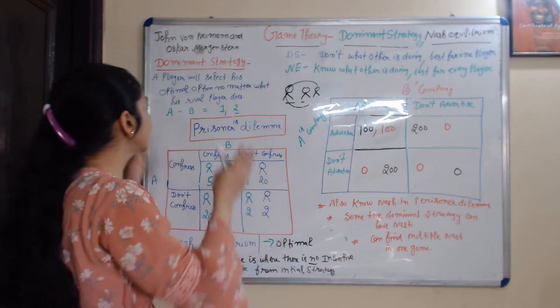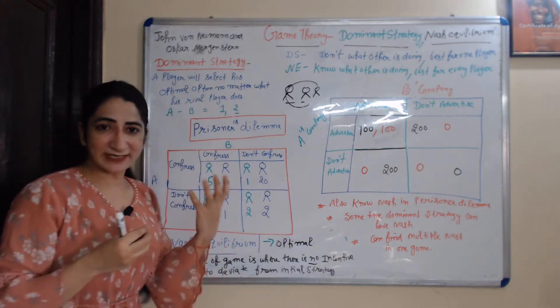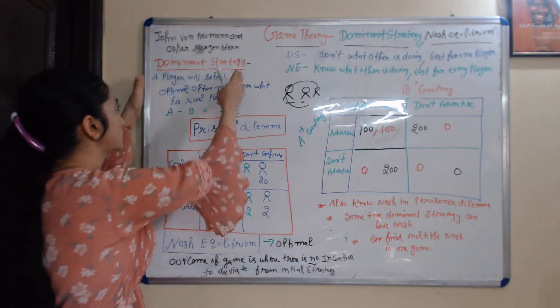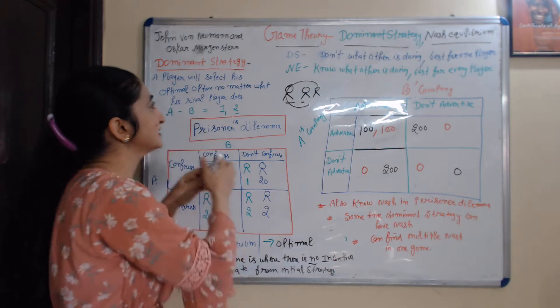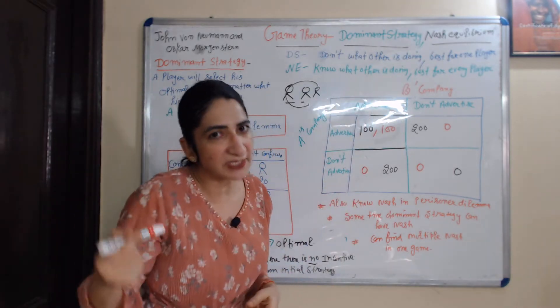There are two cases we study under game theory. First is dominant strategy, and the other one is Nash equilibrium.